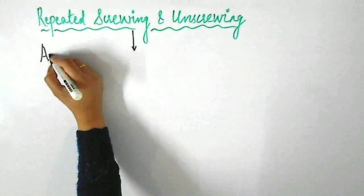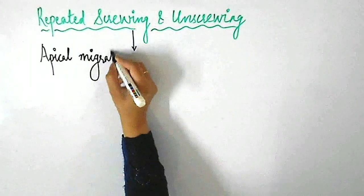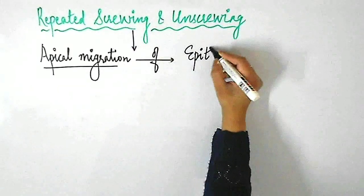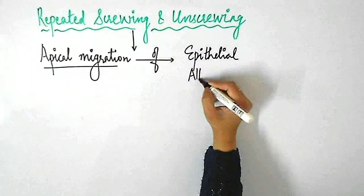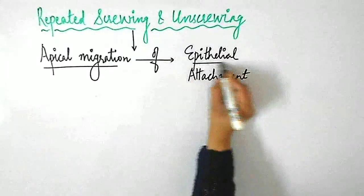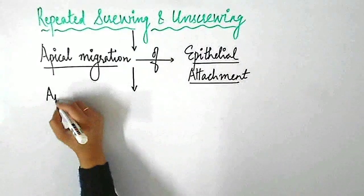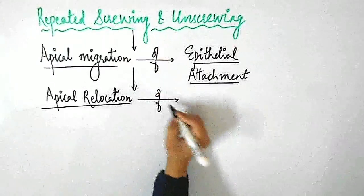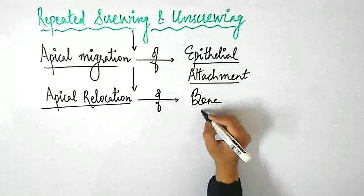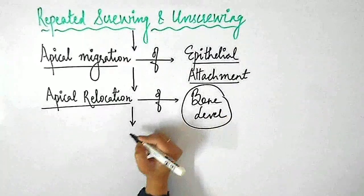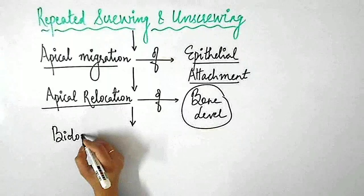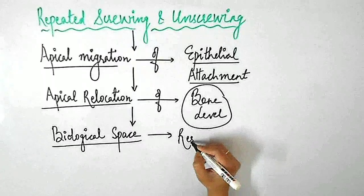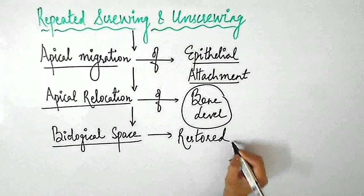Another factor influencing marginal bone loss is repeated screwing and unscrewing. Repeated screwing and unscrewing movements of the healing screw result in apical migration of the epithelial attachment around the implant collar. This in turn results in an apical relocation of the bone level, meaning bone resorption takes place due to disruption of the soft tissue seal so that the biological space compatible with the health of the peri-implant tissues is restored.